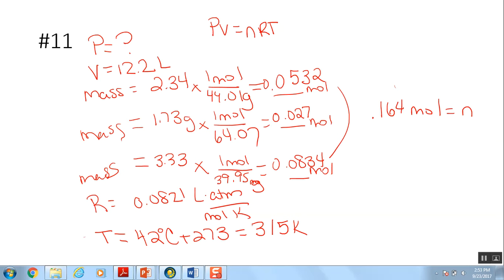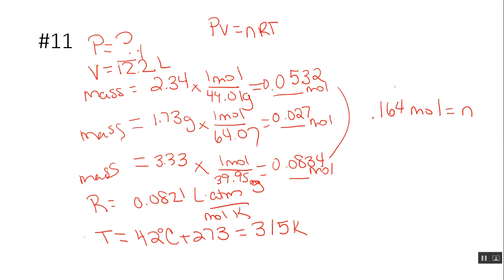I wanted to take a minute and show you the work for number 11. I just started out and put down some information based on what number 11 said. It said to calculate the pressure that's in torr if you have a volume of 12.2 liters. It says that you have a sample of gas.